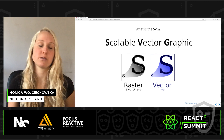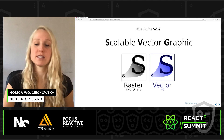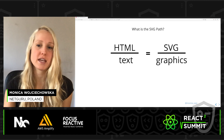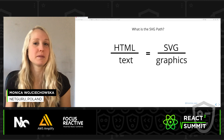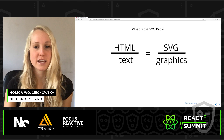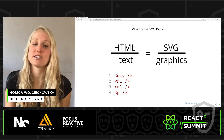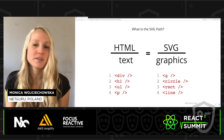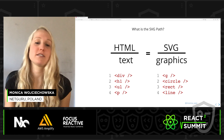What's key for today's presentation is that SVG is not just an image format — it's actually a language for describing 2D graphics. I like to say that SVG is to graphics what HTML is to text. Where HTML has elements like divs, headers, lists, and paragraphs, SVG has elements like the group container, circle, rectangle, lines, and the SVG path element, which is the star of today's show.